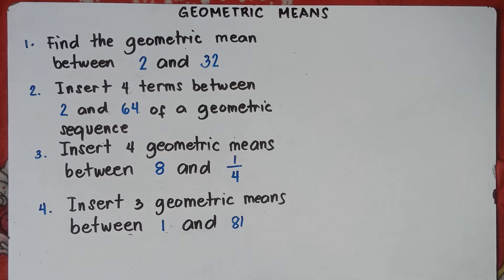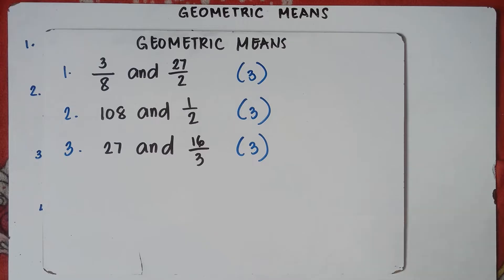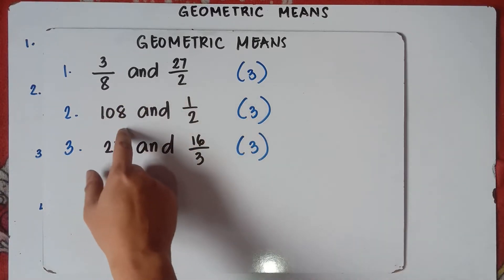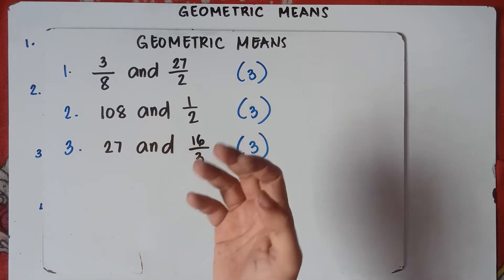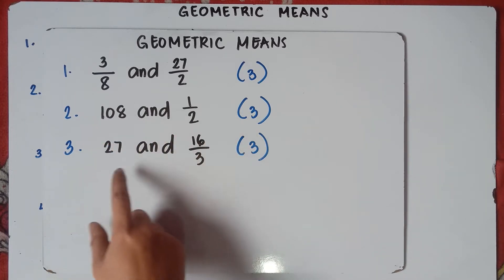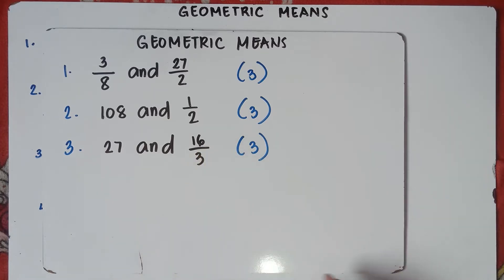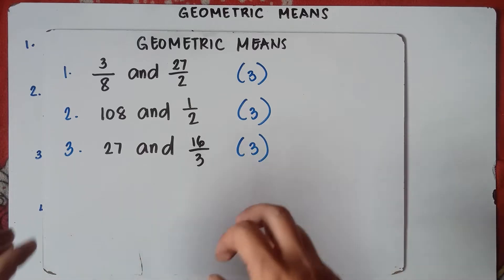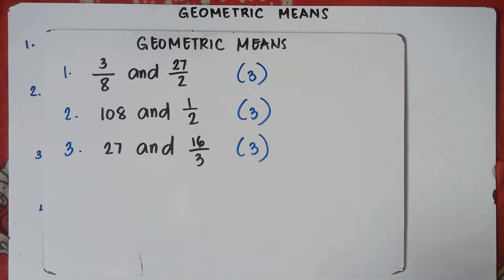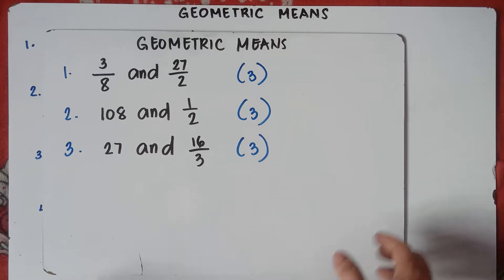The next part of our video class is still geometric means, but this is quite tricky since our given samples are fractions. Example number 1: 3 over 8 and 27 over 2, and we are told to insert 3 geometric means. Number 2: 108 and 1 half, insert 3 geometric means. Number 3: insert 3 terms between 27 and 16 over 3. This is quite tricky with fractions, but do not worry — I will put the link in the description on how to answer these.